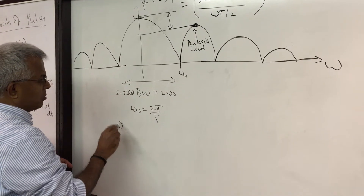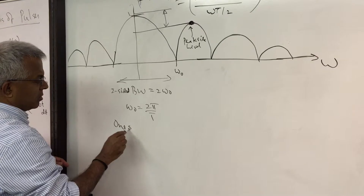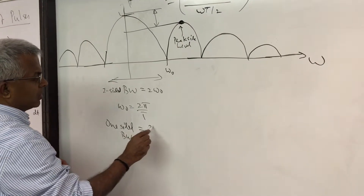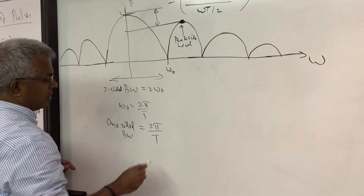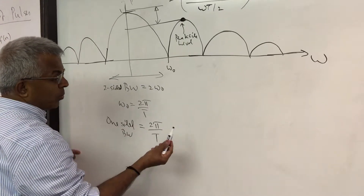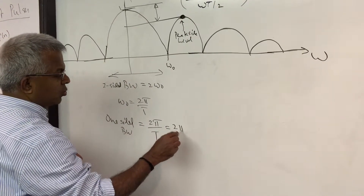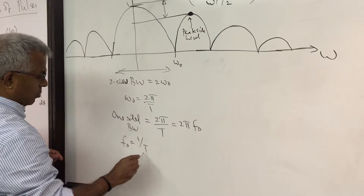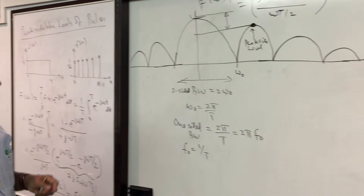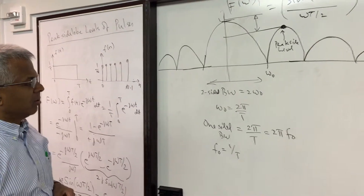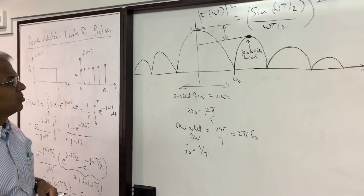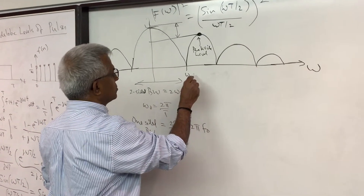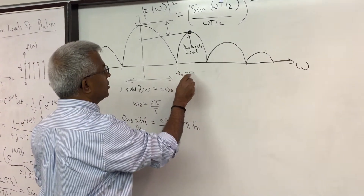The one-sided bandwidth is ω₀ = 2π/T. If we define f₀ = 1/T, then ω₀ = 2πf₀, meaning 1/T is the one-sided bandwidth in frequency and 2/T is the two-sided bandwidth.